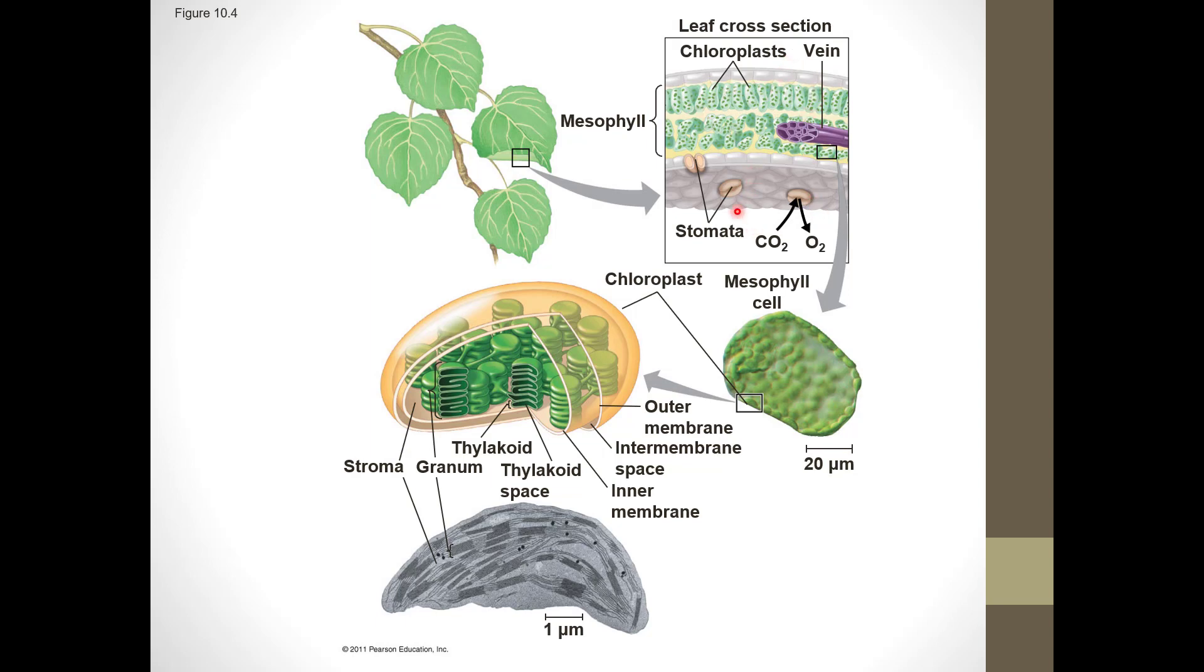First of all, in the epidermis there are openings called stomata that allow gases in and out. There is a mesophyll tissue where photosynthesis takes place, and there are veins composed of xylem and phloem that transport water and the results of photosynthesis. The sugary nectar produced by photosynthesis is transported in these veins to the stem and stored in the roots.